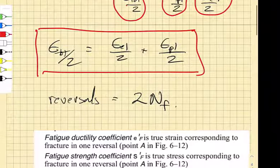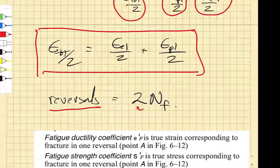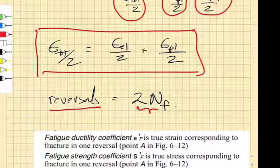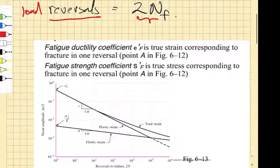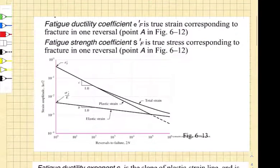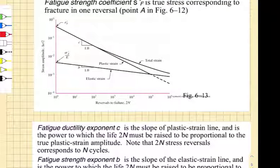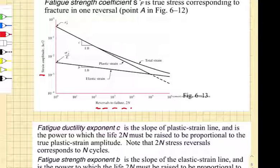And now instead of talking about cycles to failure, you talk about load reversals. So they would gather tons and tons of data where they would measure these strains and they would plot the strain amplitude on the y-axis against the reversals to failure. That's 2N.